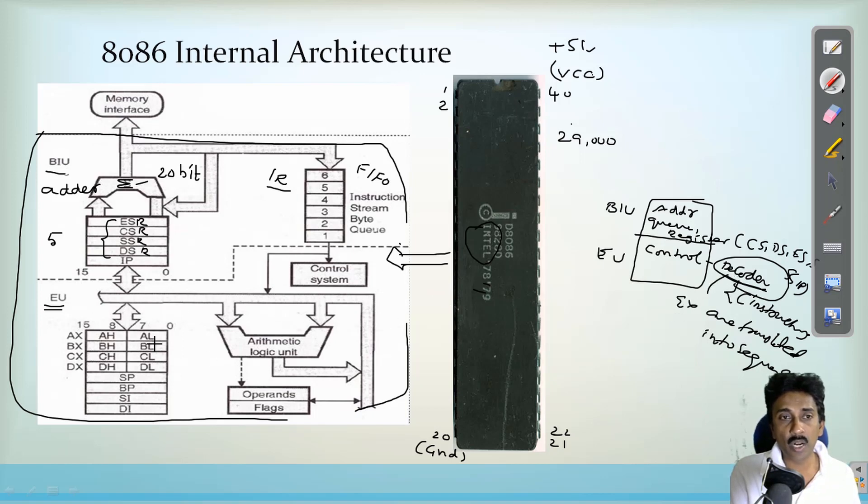So execution unit is always ready to take the instructions from the queue. And we have some general purpose registers like AX, BX, CX and DX. Along with that, stack pointer and base pointer is also used for accessing the stack.